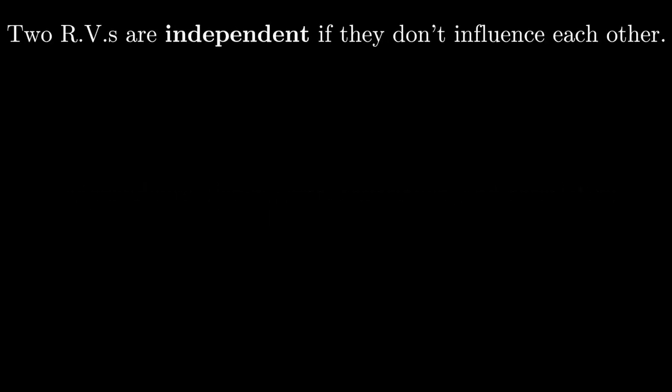I've spoken before about why probability is so important to machine learning. Some of that has to do with modeling noise, some of that has to do with representing uncertainty, but some of it has to do with representing structure in data via joint probability distributions. But those distributions can only be interesting if they capture dependence between random variables. To understand what that means, we must first talk about independence.